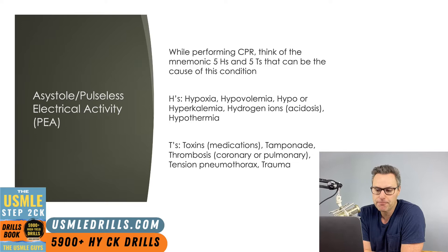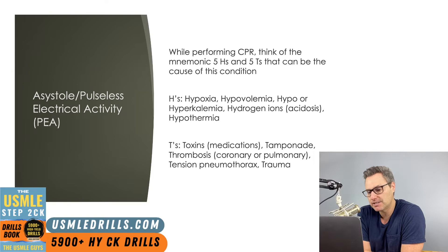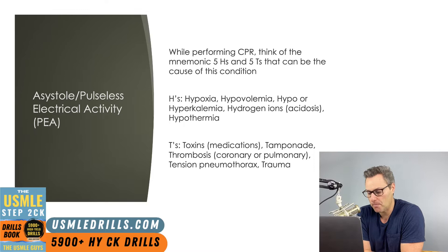You're going to be looking for reversible causes of asystole and PEA. A helpful mnemonic is the five H's and five T's. The H's stand for hypoxia, hypovolemia, hypo- or hyperkalemia, hydrogen, and hypothermia. The T's stand for toxins (including medications), tamponade, thrombosis (likely coronary or pulmonary), tension pneumothorax, and trauma.